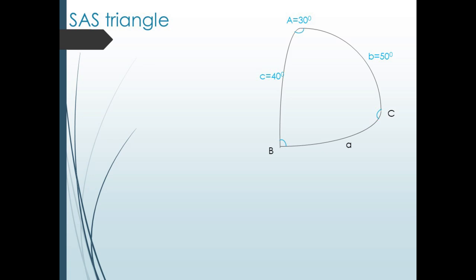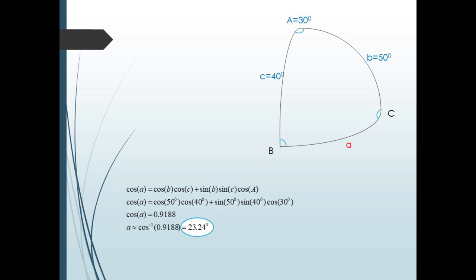Consider solving the spherical triangle shown here. This is a side-angle-side case since we know two sides and the included angle. Because we know all the information at vertex A, we can use the law of cosines to find side a. Plugging these in, we get: cos a = cos 50 cos 40 + sin 50 sin 40 cos 30. Evaluating, we get cos a ≈ 0.9188. Hence, a = arccos(0.9188) ≈ 23.24 degrees.